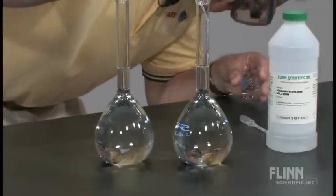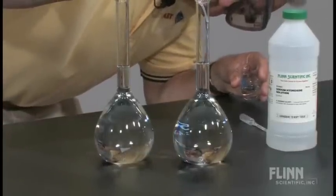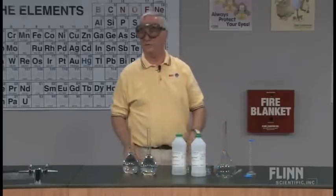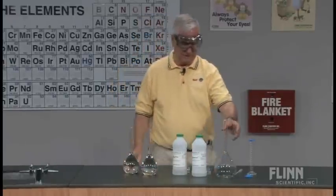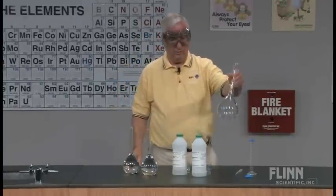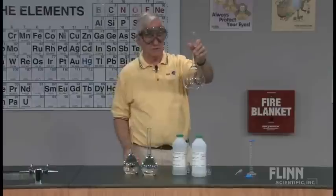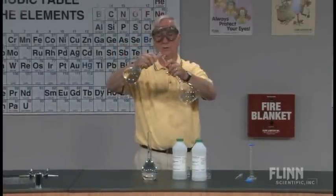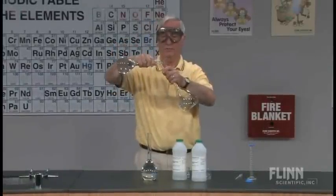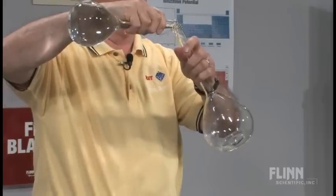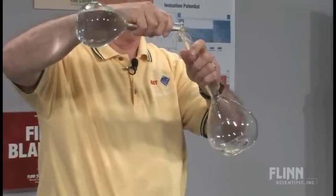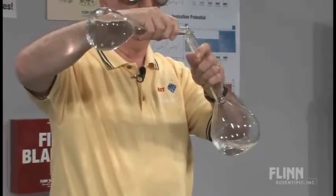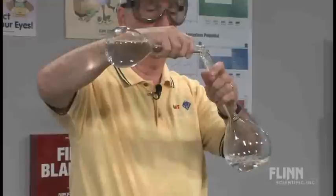Now once we have exact quantities, we have 500 and 500. Is there a time when 500 plus 500 does not equal a thousand? Well, I have a one liter volumetric flask here and I am now going to transfer the first — the base solution — pouring carefully, and we are going to get the full volume into the flask.